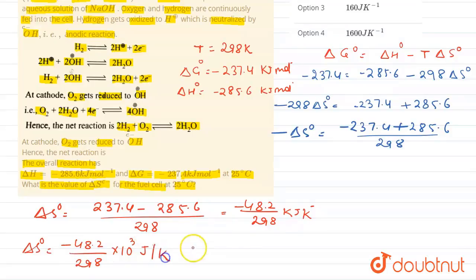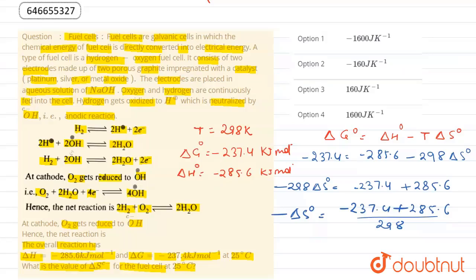On solving this, we get -161 J/K. So the nearest possible answer for this question is Option 2: -160 J/K. This is the solution for this question. Thank you.